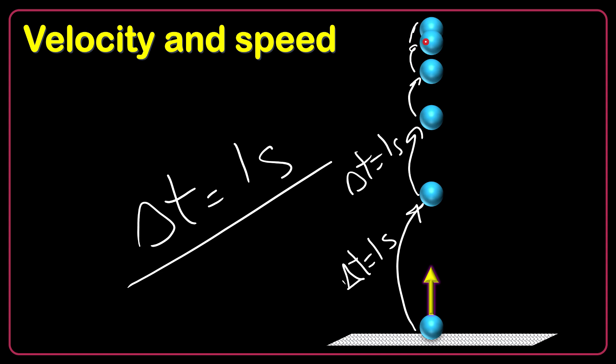As you see, the consecutive pictures are getting closer to each other when the object is getting closer to its peak point. The reason is that it's decelerating or slowing down. So, normally, we expect the consecutive photographs to be closer to each other when we go up.